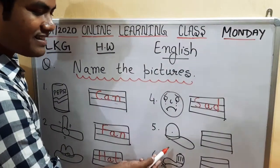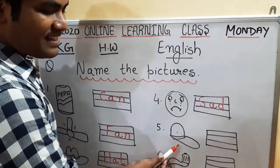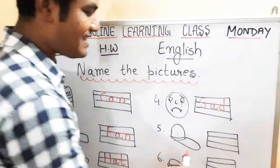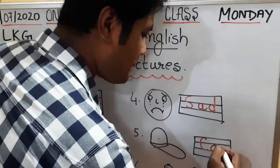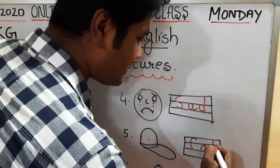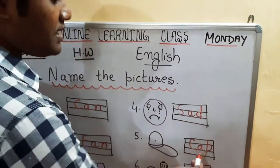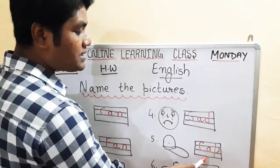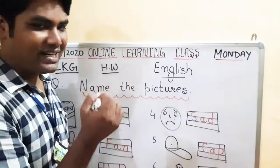Next, what is this, kids? This is a cap. Yes, correct. Write down C-A-P like this. Cap. A-P, app sound words. Cap is an example of app sound words.